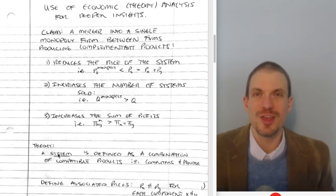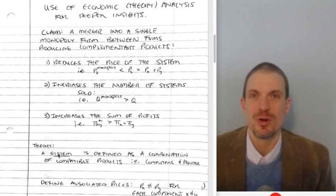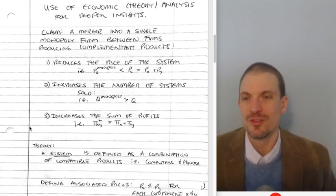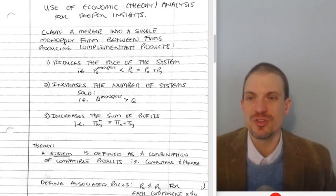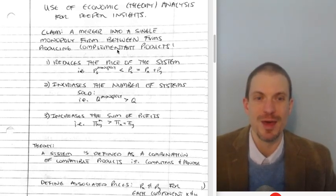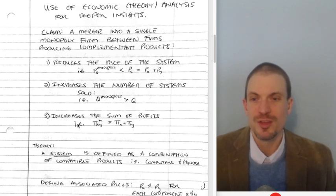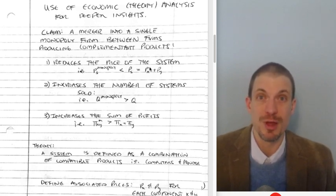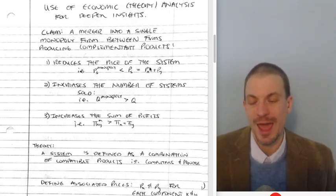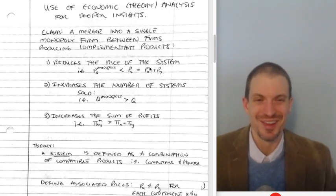to reinforce this. So the example rests on the merger involving complements, not substitutes, complements. And so my claim is a merger into a single monopoly firm between firms producing complements is going to give us this result. It's going to reduce the price of the system as a whole. It's going to increase the number of systems sold. It's going to increase the sum of profits. By system, I mean the two complementary goods sold together. So you think of like software and hardware or apps, or think of like cars and tires, whatever is the case.